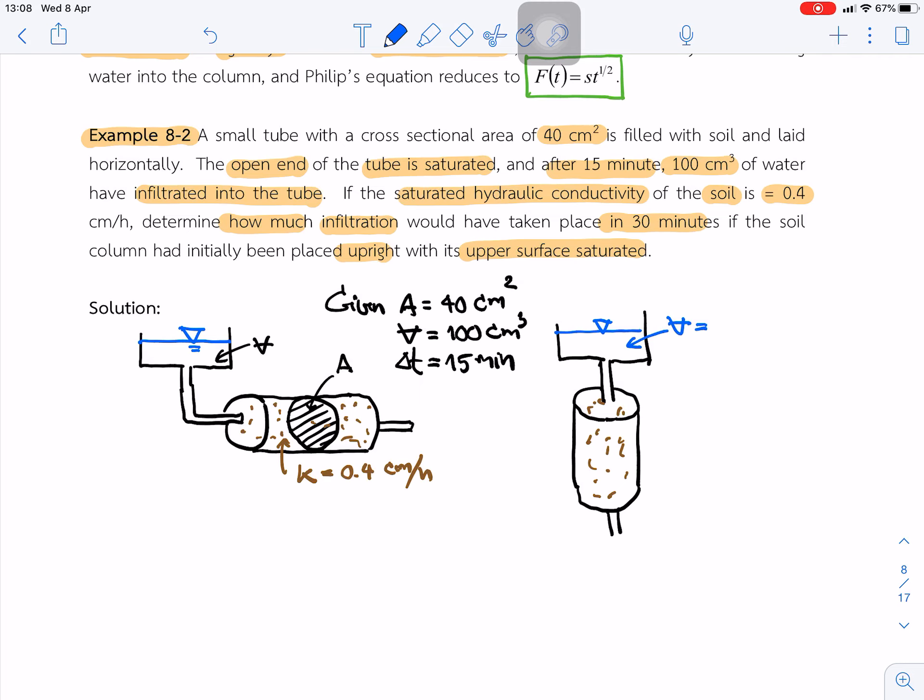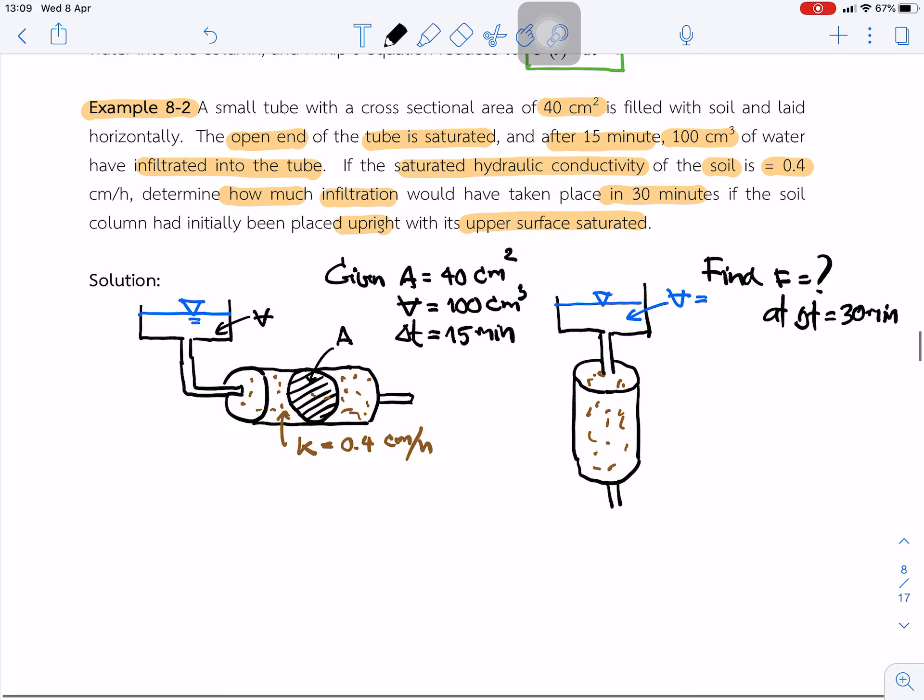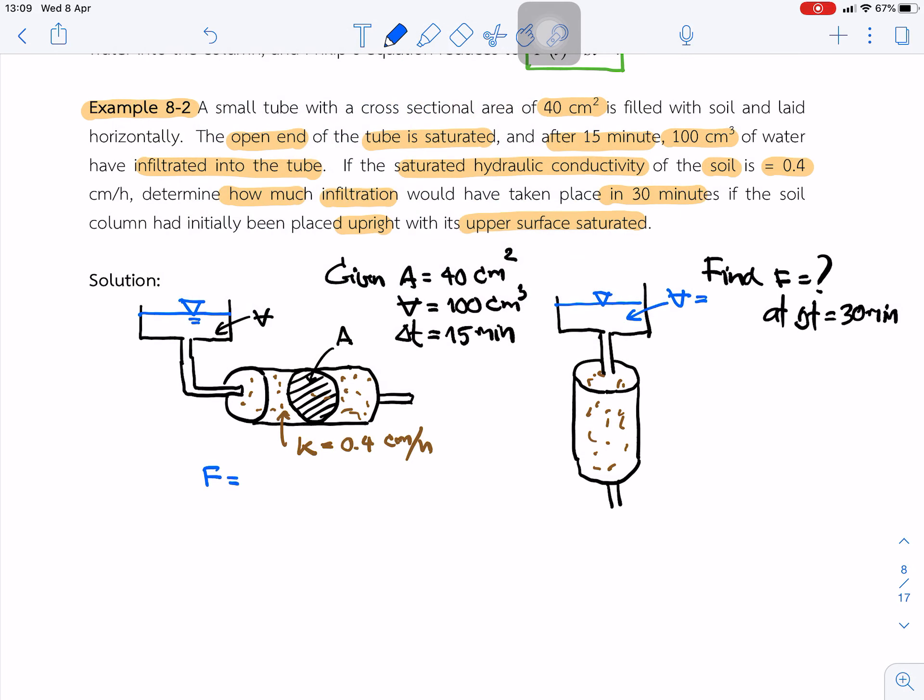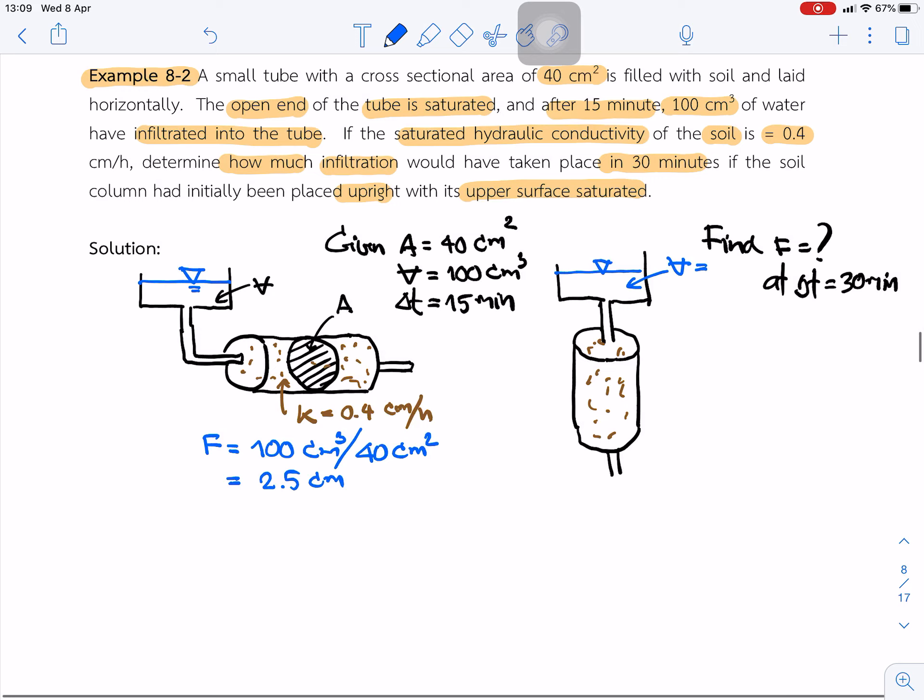So the question is you want to know how much infiltration at 30 minutes. For the infiltration, cumulative infiltration is 100 cubic centimeters divided by the area 40 cm², so we got the depth is 2.5 centimeters.